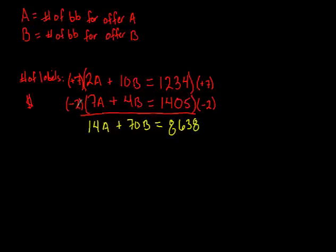Let's distribute in the negative 2 to the second equation. Negative 2 times 7A, negative 14A. That's just what I want. Negative 2 times positive 4B is plus negative 8B. And on the other side of the equal sign, distribute negative 2 times 1405. And that gives you negative 2,810.